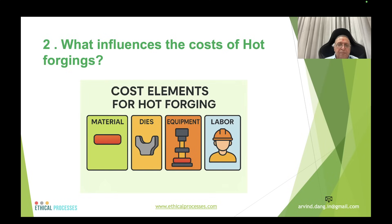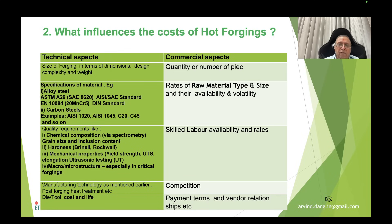The cost elements influencing hot forging are primarily material, die, equipment, labor, and other costs like manufacturing variable cost and marketing variable cost. Technical aspects influencing cost include size and design complexity, type of steel (alloy or carbon), quality requirements such as chemical composition, grain size, hardness, mechanical properties, and microstructure. Commercial aspects include quantity, raw material availability and volatility, skilled labor availability, competition, and payment terms.